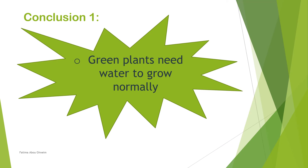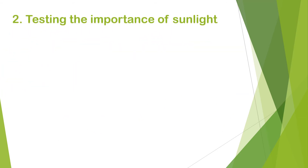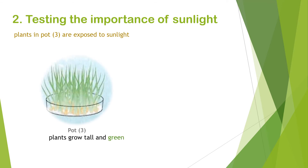Conclusion one: green plants need water to grow normally. Without water, there is no normal growth for green plants. Two, testing the importance of sunlight. We have two pots: pot three and pot four. Plants in pot three are exposed to sunlight and grow tall and green. Plants in pot four are deprived of sunlight and grow tall and yellow.